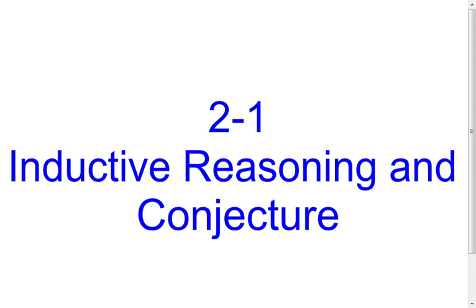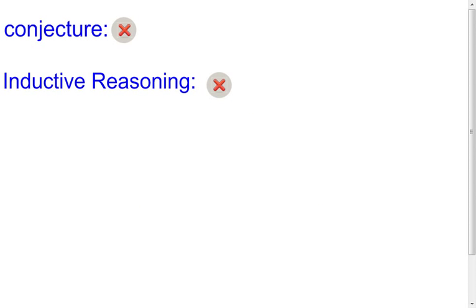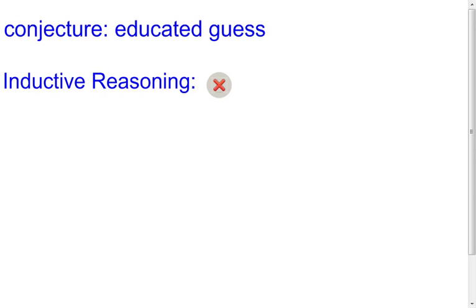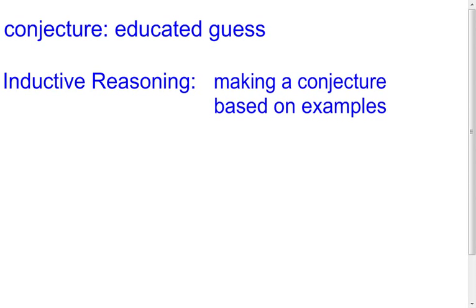Now we're going to talk about reasoning, and specifically in this lesson, we're going to talk about inductive reasoning and what a conjecture is. A conjecture is nothing more than an educated guess. When you look at something and make that educated guess about it, you are making a conjecture. Inductive reasoning is when you come up with a conjecture based off of a bunch of examples — you see some numbers and predict what the next one is.